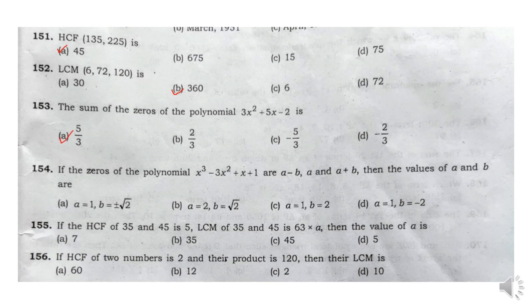Question 154: If the zeros of the polynomial x cubed minus 3x squared plus x plus 1 are A minus B, A, and A plus B, then the values of A and B are: Answer A — A is equal to 1 and B is equal to plus or minus root 2.